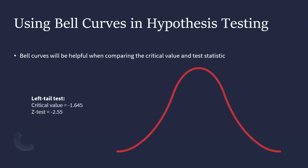So for example, let's say it's a left-tailed test, and we have this bell curve here. Our critical value, we found out that that was negative 1.645.